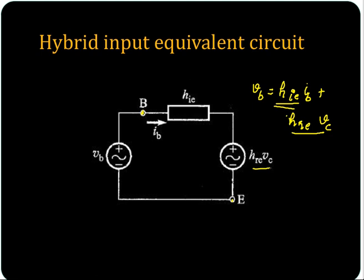HRE is unitless — it is a ratio of V1 to V2. So this is how you represent the input equivalent circuit.